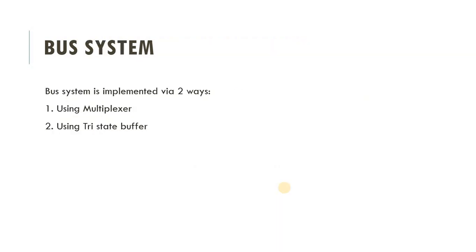We can implement the bus system using two approaches: the first is using a multiplexer and the second is using a tristate buffer. In this lecture we will understand how to implement the bus system with the multiplexer. But first, let's understand what buses actually are and how they are used in a computer system.